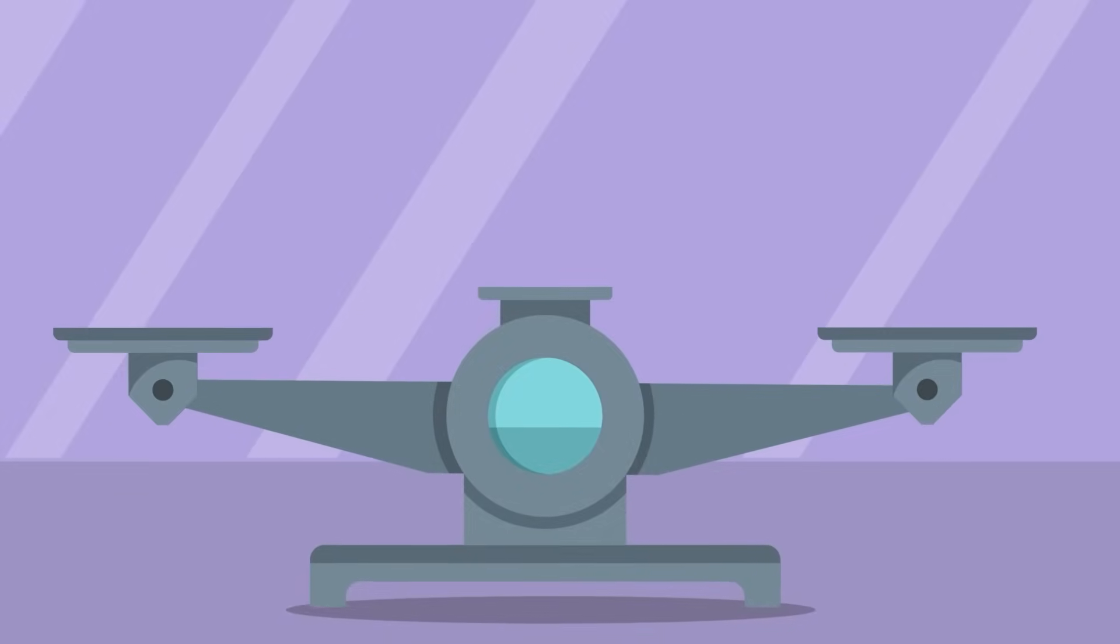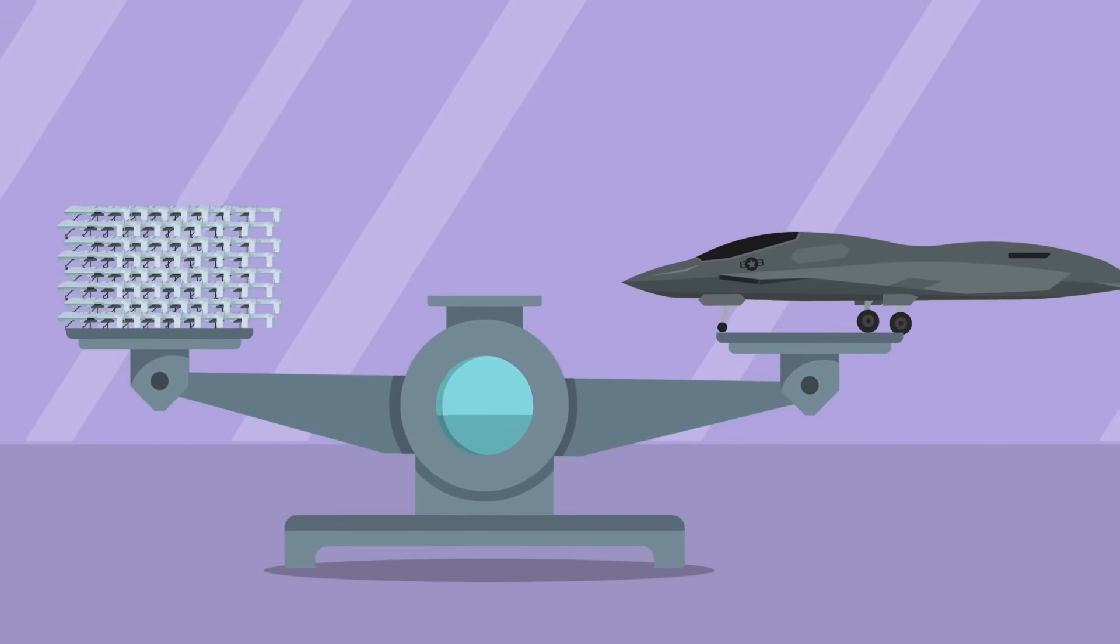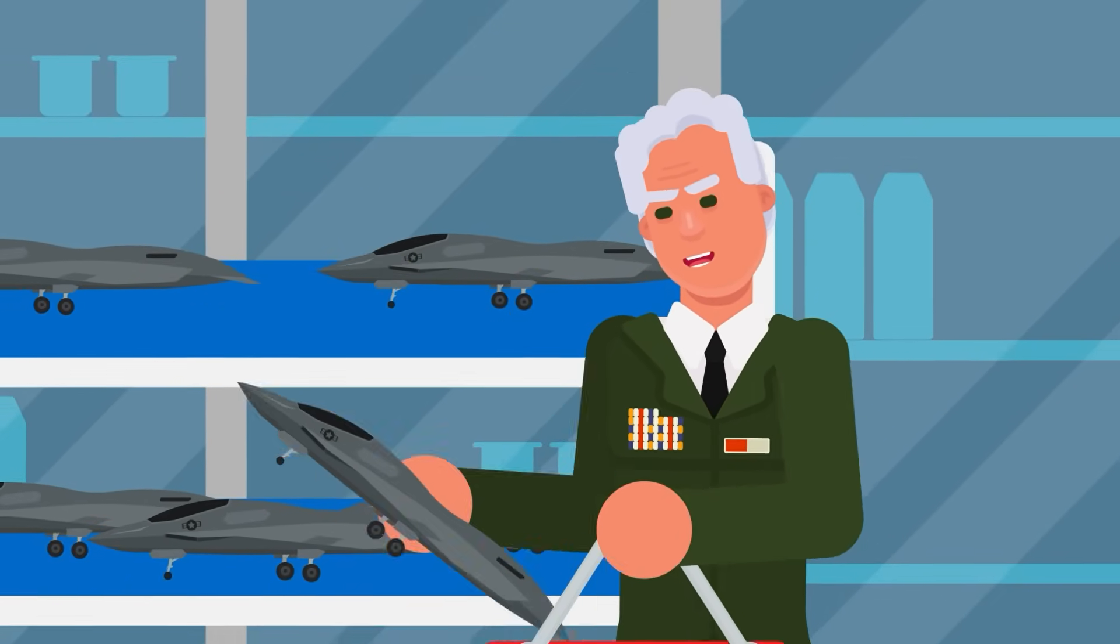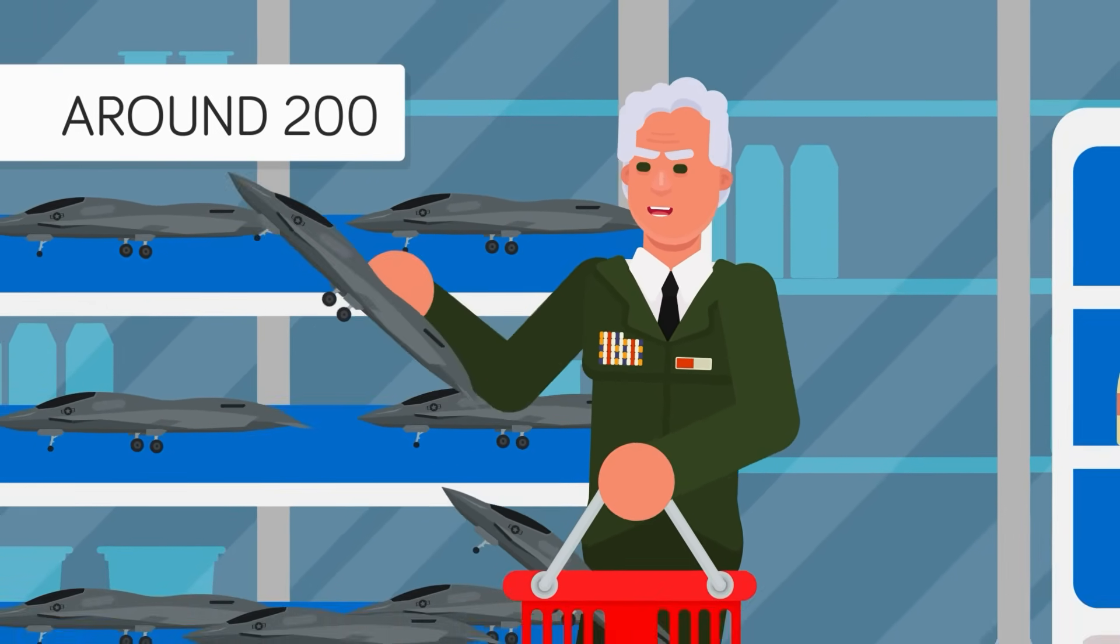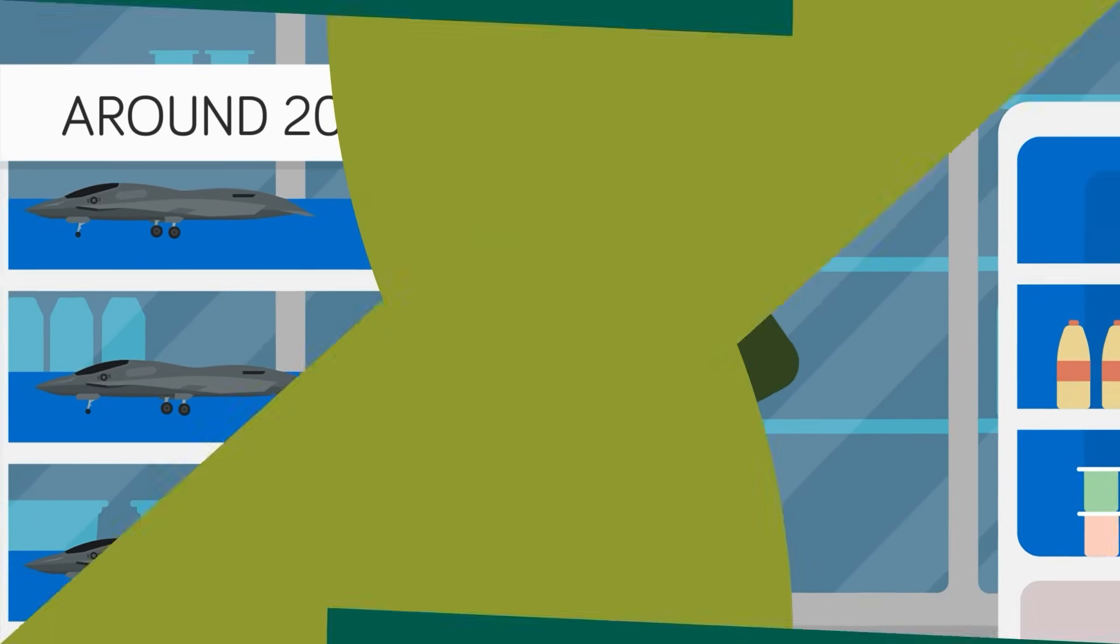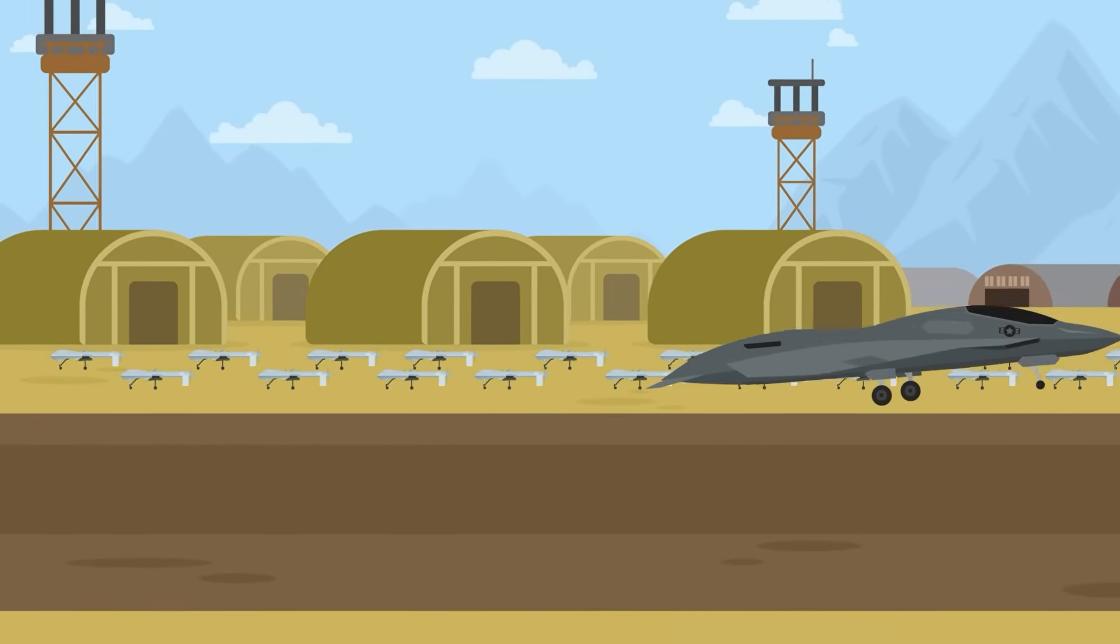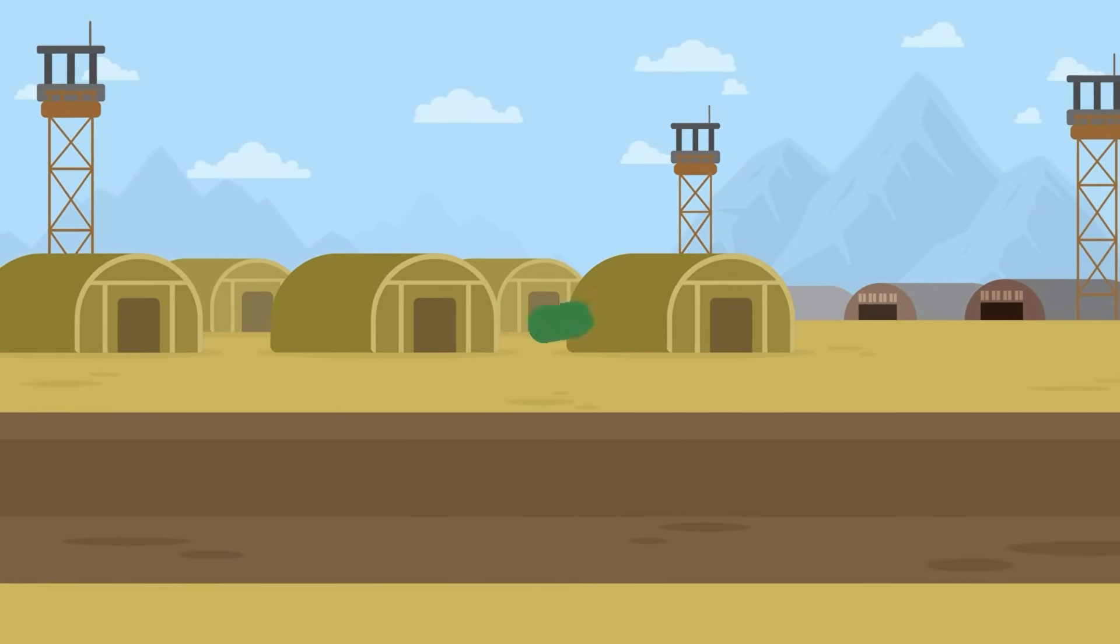This approach also hints at the fact that the F-47 will not be available in very large numbers, unlike its drone wingmen. The Air Force has remained tight-lipped on this too, but it's believed that it wishes to purchase around 200 or so F-47s, putting it just above its purchase of the F-22. Combined with 1,000 loyal wingmen, it'll give the Air Force significant punching power in the sky, unless the entire design is inherently flawed.